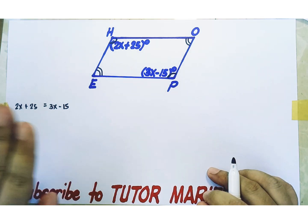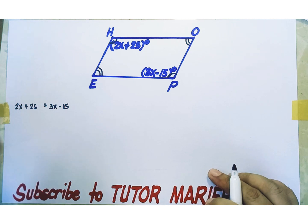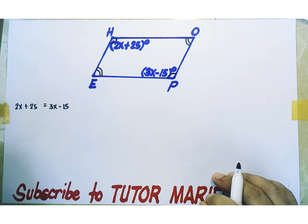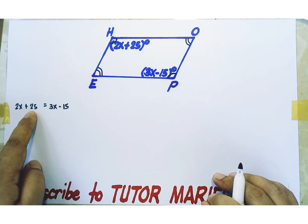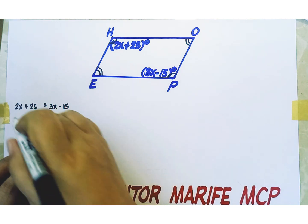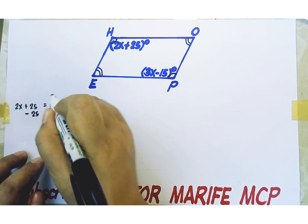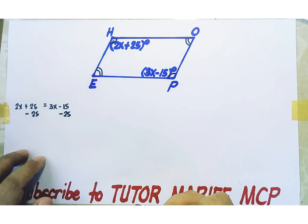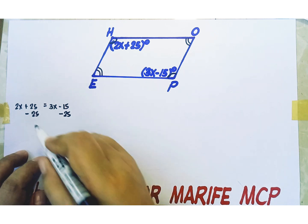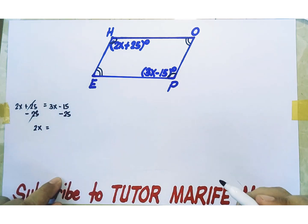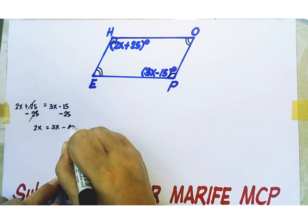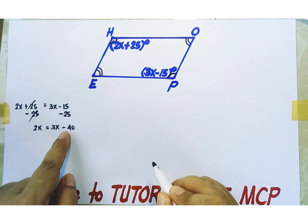We collect the variable terms on one side of the equation, and we collect the constant terms on the other side of the equation. Let's collect the variable terms on the left side and collect the constant terms on the right side. Eliminate plus 25 on the left side of the equation by subtraction property of equality — subtract 25 from both sides of the equation. Left side minus 25, right side minus 25. Additive inverses cancel out each other on the left side of the equation. The left side becomes 2X only. The right side becomes 3X minus 40, since negative 15 minus 25 is equal to negative 40.